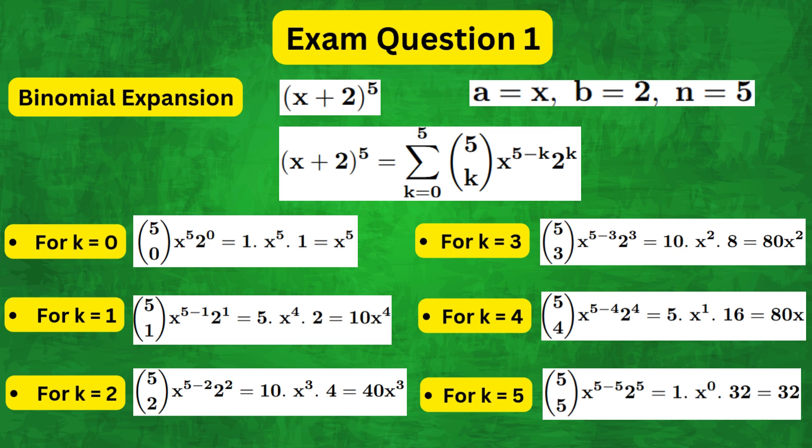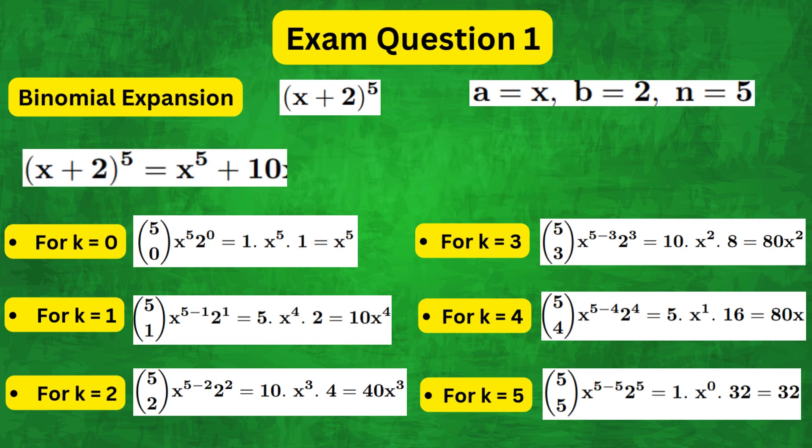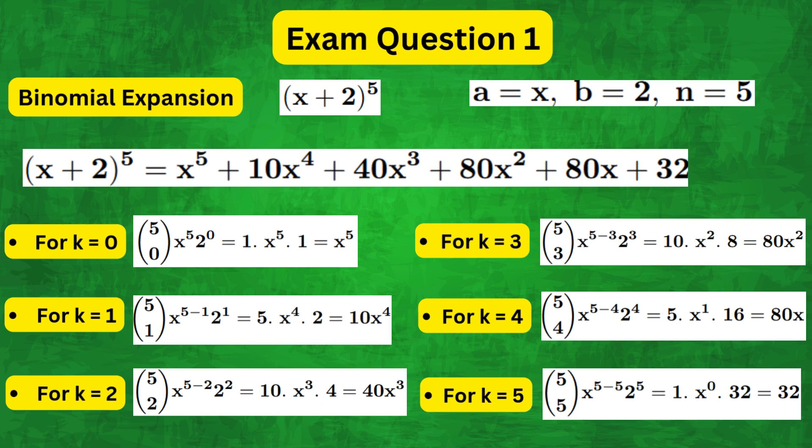So then the final expansion becomes x plus 2 to the power of 5 equals x to the power of 5 plus 10x to the power of 4 plus 40x cubed plus 80x squared plus 80x plus 32.